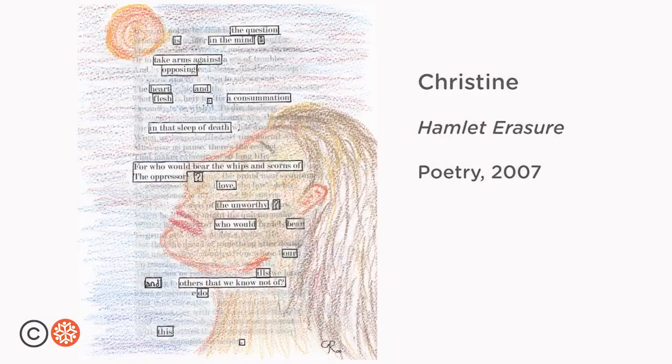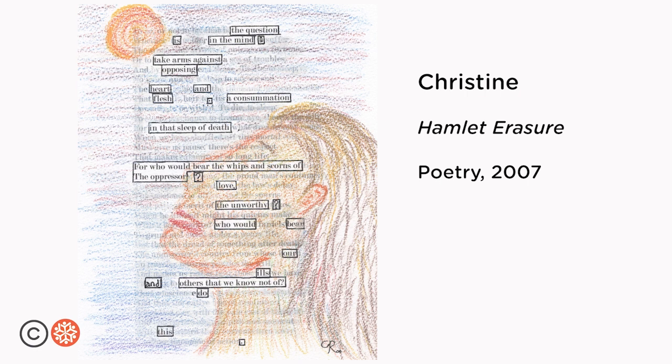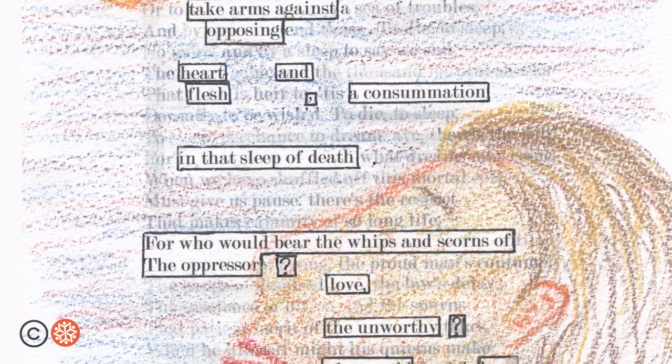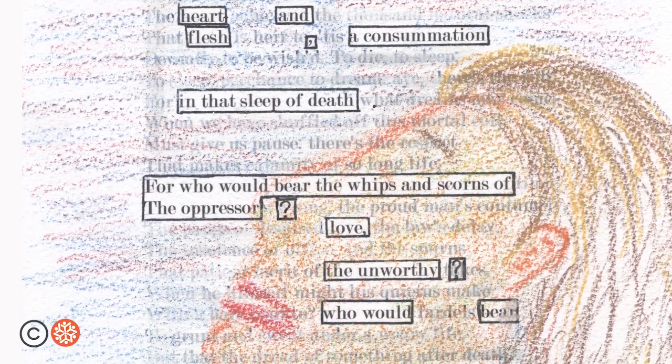Some poets will use illustrations to cover over portions of their source texts. Here is an example by a 17-year-old student that I worked with. Christine took the famous to be or not to be speech from Shakespeare's play Hamlet and did a color pencil drawing of a young woman staring up at the sun to accompany her erasure poem.